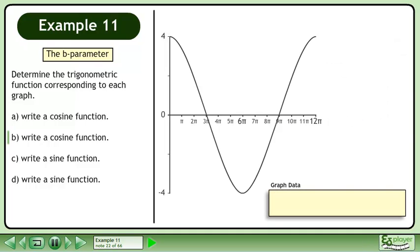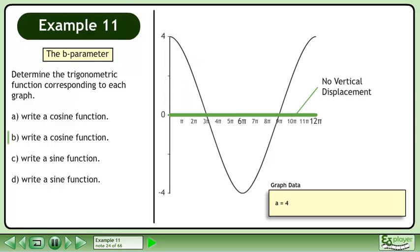Let's create a box to store the graph data. The amplitude of the graph is 4 units, so a equals 4. There is no vertical displacement, so d equals 0.